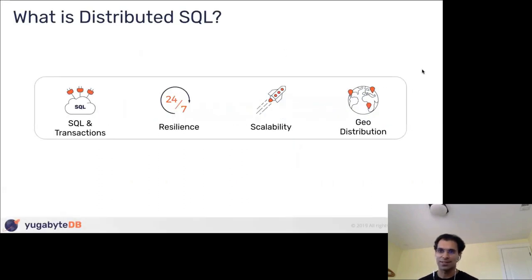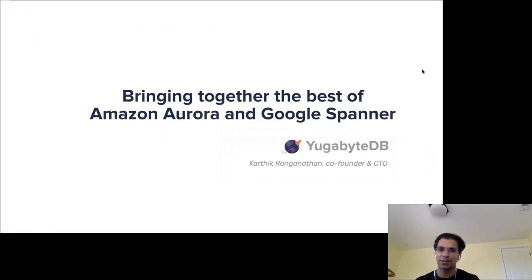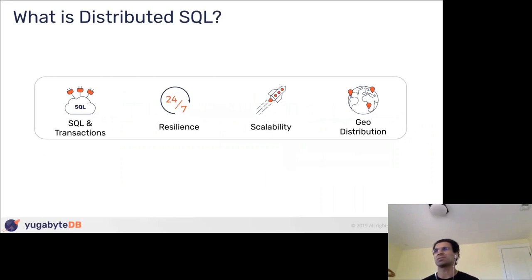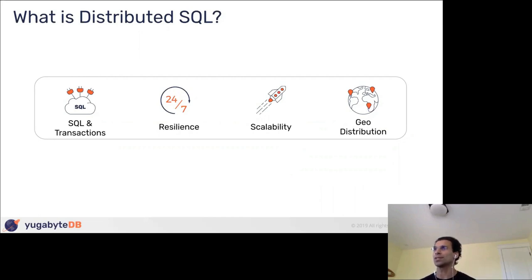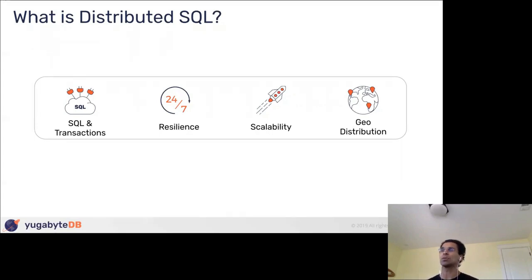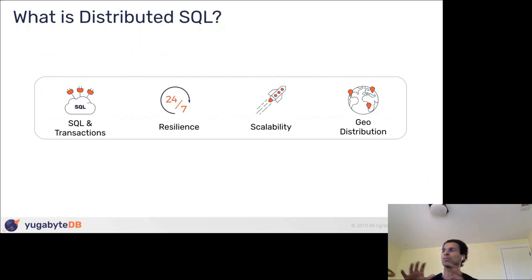Thanks, Andy. The rough overview is: I'll give a five-minute-or-less intro to what YugabyteDB is for folks who may not be aware, and then I'll go into every major decision point we made building the database. A lot of it is centered around Spanner versus Aurora, and for each decision point I'll cover the architectural backing and how we built the database. I have a lot of slides and I'm happy to go into any area in more detail.